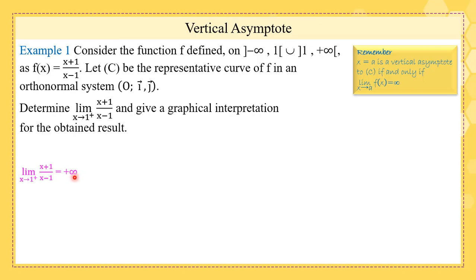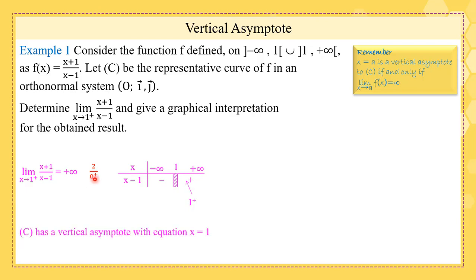The limit is plus infinity because if we substitute one we get two over zero. We draw a sign table for x minus one — opposite, same — and one plus means to the right of one, x minus one is positive, so we have zero plus. From here, C has a vertical asymptote whose equation is x equals one.